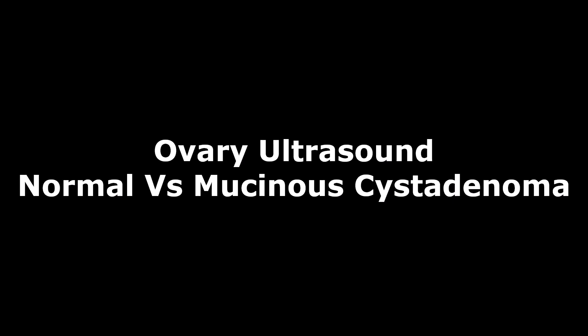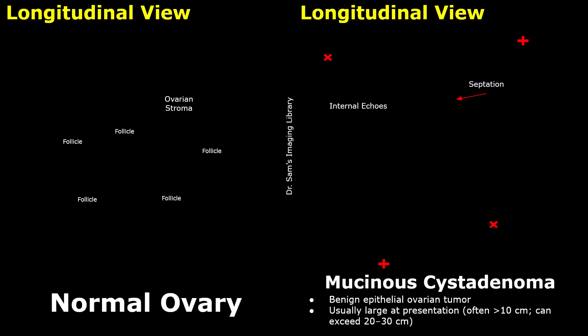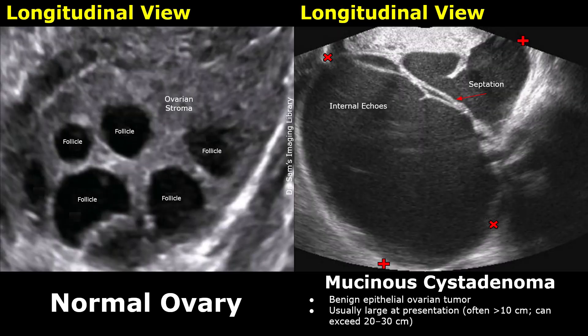Hello everyone, this is Dr. Sam and today we will learn about ovarian mucinous cystadenoma on ultrasound. Ovarian cystadenomas are benign mucin-containing epithelial tumors. They are usually larger in size than serous cystadenomas. They are often unilateral and mostly occur in reproductive age women, but can occur at any age. We will compare their appearance on ultrasound with normal ovaries for a better understanding.